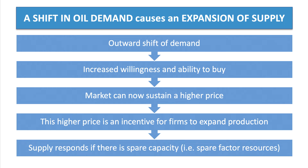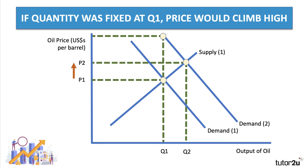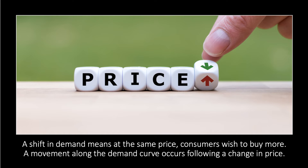If the quantity was fixed at Q1 — if supply did not respond at all to an increase in demand — then the price would climb even higher, because there's a level of demand willing and able to pay a much higher price than P2 for the quantity Q1. So a shift in demand means that at the same price, consumers wish to buy more. A movement along the demand curve, however, occurs following a change in the price, and that's nearly always caused by a shift in the supply curve.